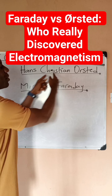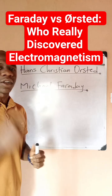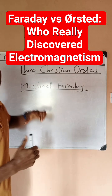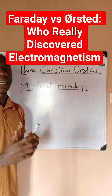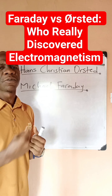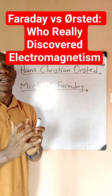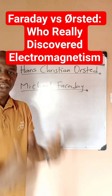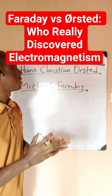Now we have Hans Christian Ørsted and then we have Michael Faraday. These are very important names in the concept of electromagnetism. Now what is the concept that Hans introduced? Hans told us that when you have a moving current, when you have current flowing through a conductor, that moving current through a conductor creates magnetism. So that is the concept of Hans — moving current creates a magnetic field around it.